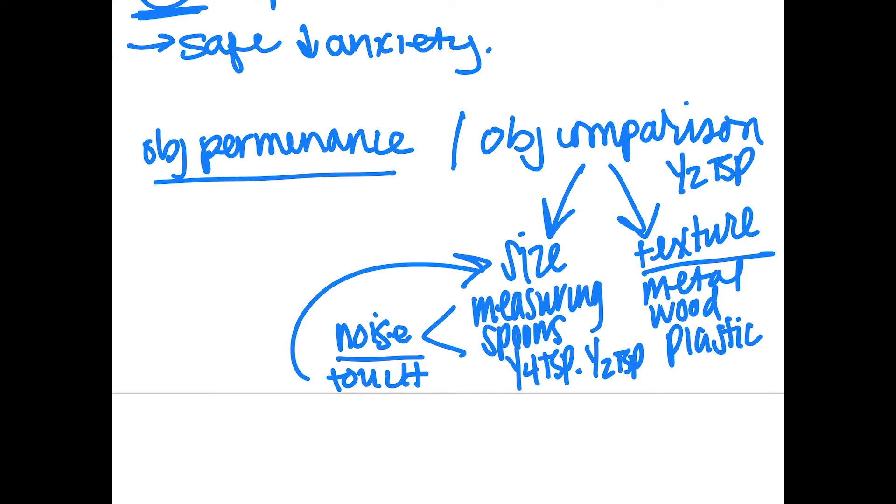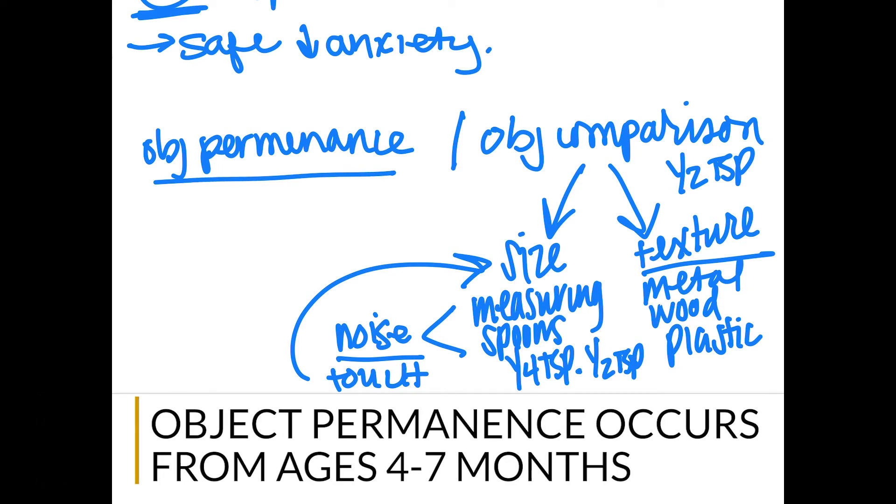Object permanence, on the other hand, is going to be about understanding that when you can't see an object, it still exists. It's a cognitive level that happens in typically developing kiddos.